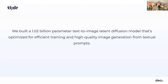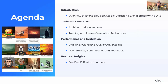The TL;DR: Desi Diffusion 1.0 is a 1.02 billion parameter model. It was trained on the LAION v2 dataset and then fine-tuned on the LAION Art dataset. We used advanced training techniques to speed up training, improve performance, and achieve better inference speed and generation quality — and that's what I'll cover throughout this presentation.